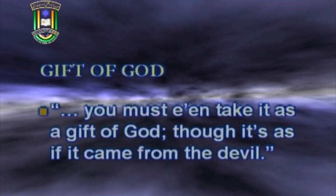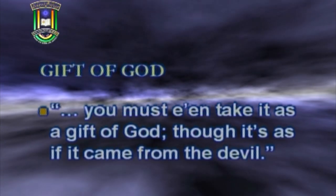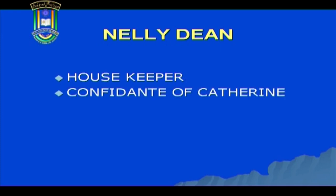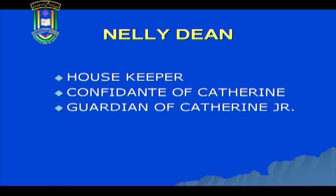Heathcliff is a vagabond who was found by Mr. Earnshaw in Liverpool and brought up along with his children. In the course of the novel, Heathcliff falls in love with Catherine Earnshaw. Though Mr. Earnshaw was optimistic about bringing up Heathcliff, telling his wife, 'you must take it as a gift of God though it's as if it came from the devil,' the family never considers Heathcliff as a gift of God — instead he is considered a usurper. Nellie Dean, the housekeeper and confidant of Catherine, comments that Hindley considered Heathcliff a usurper of his parents' affections and privileges.